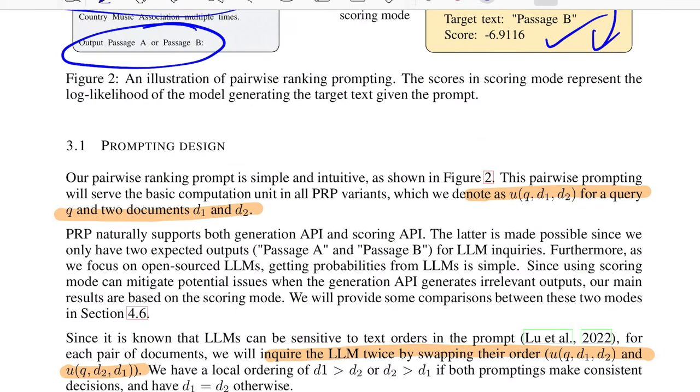A basic look at how pairwise prompting looks like is that you take in a query Q, you have first document D1, second document D2, and then you have function U that is responsible for telling if D1 is more relevant to D2 for a given query Q, or vice versa. They also look into seeing if we shuffle the order of documents - which is D1, D2, or put in D2, D1 - then is the final ordering going to change or not. That also they have discussed in one of the tables.